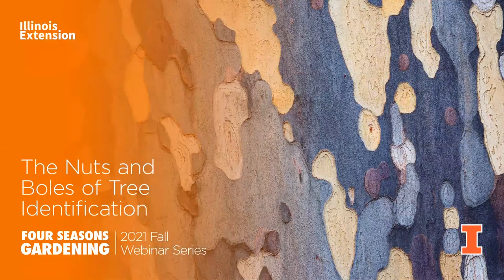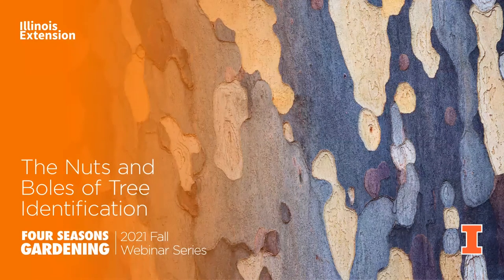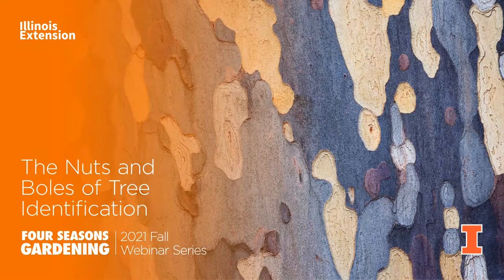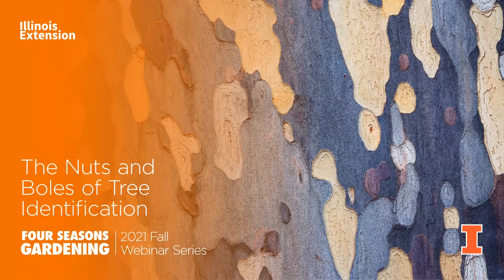In today's session, we're going to discuss some of the basics of tree identification. Whether you're talking about trees in our own landscapes or communities, landscaped areas, or trees in their natural environment, correct identification should always be the first thing. It should always precede any diagnosis or treatment or management when we're caring for those trees. To achieve accurate identification requires a combination of both knowledge and experience that come with a lot of practice.